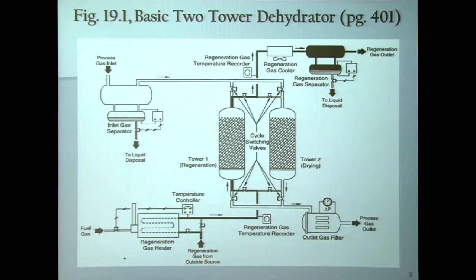The gas initially comes into a separator followed by an inlet filter coalescer or filter separator. This is probably the most important part of the entire unit, because you really do need to have excellent separation of the liquids and mist from the vapor.